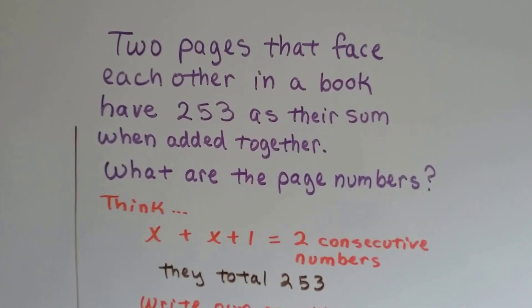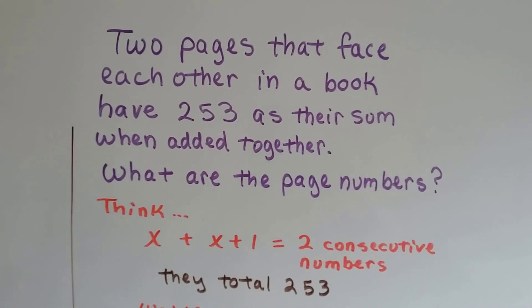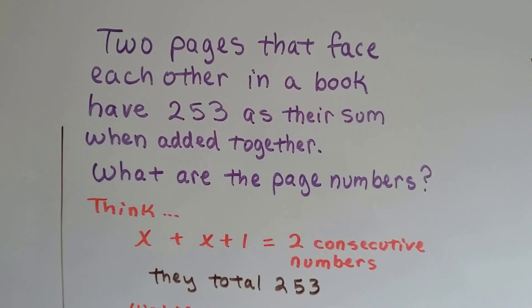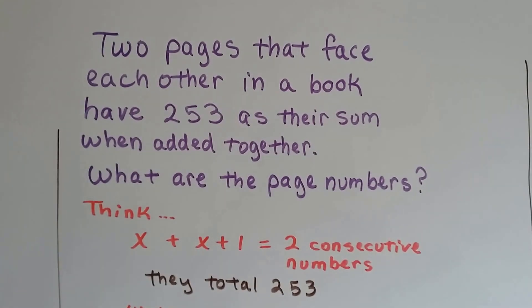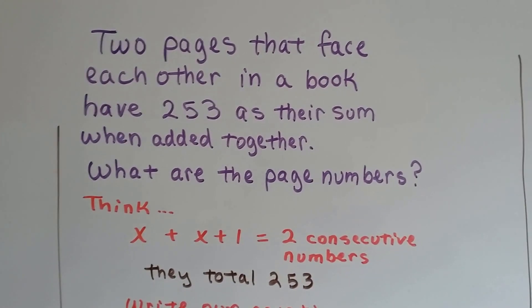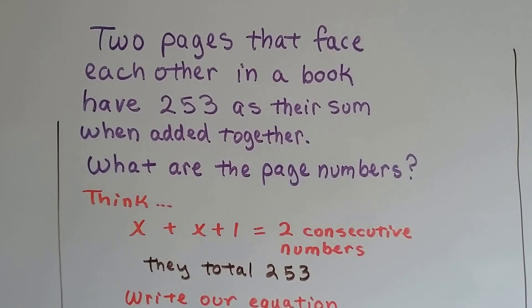So, two pages that face each other in a book have 253 as their sum when added together. What are the page numbers? Doesn't this almost seem impossible? Well, not if you saw the last couple of videos.